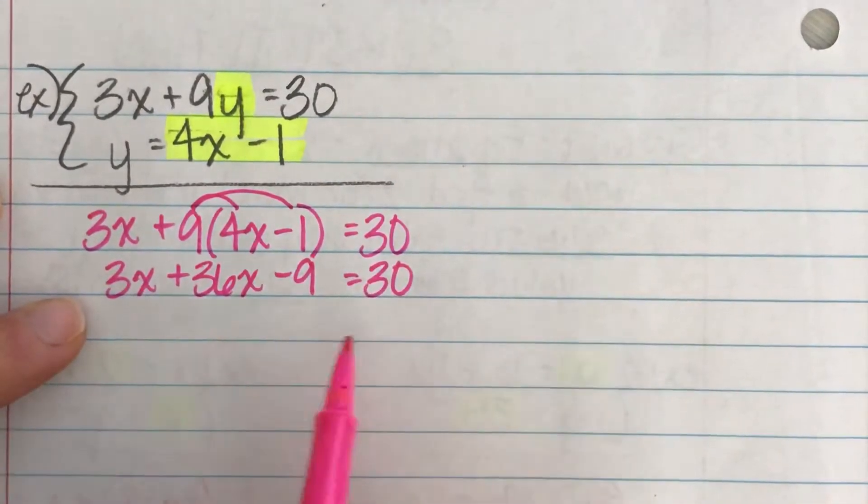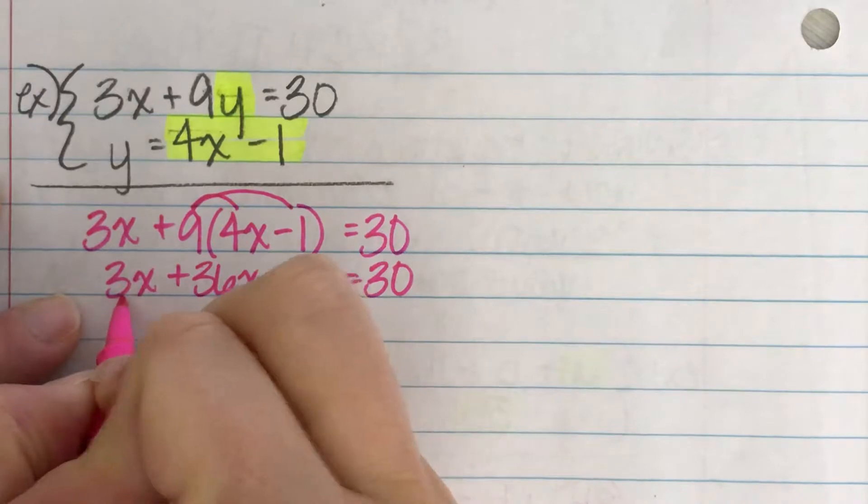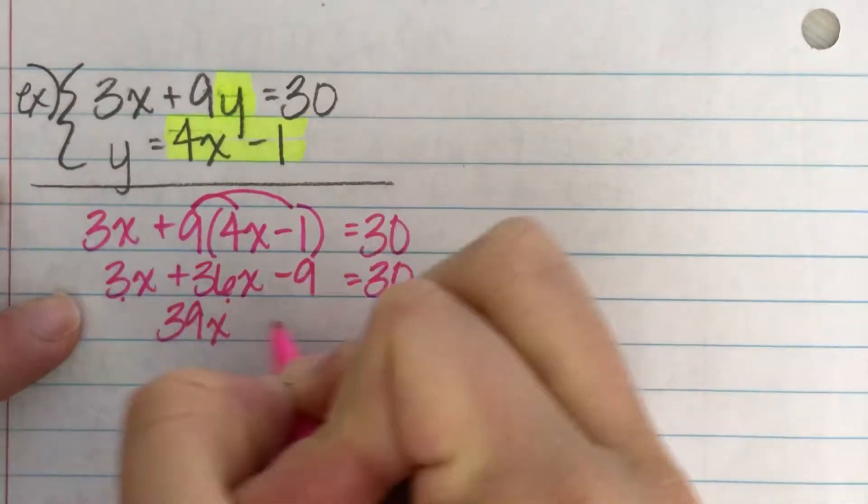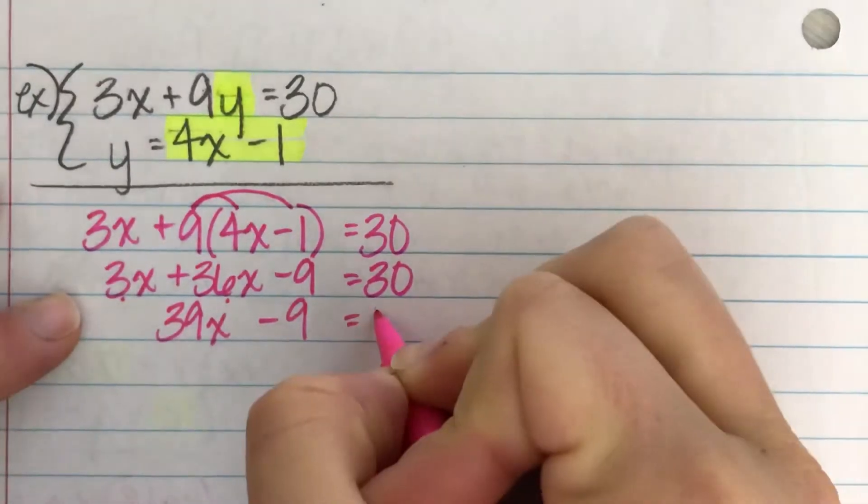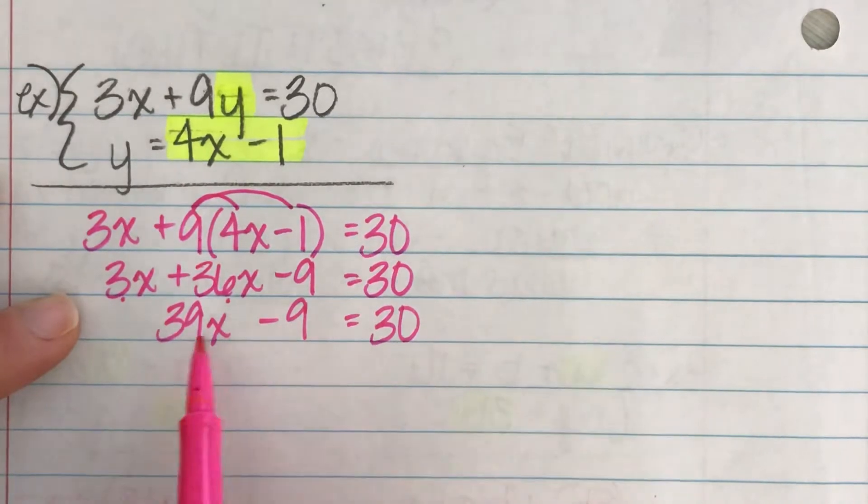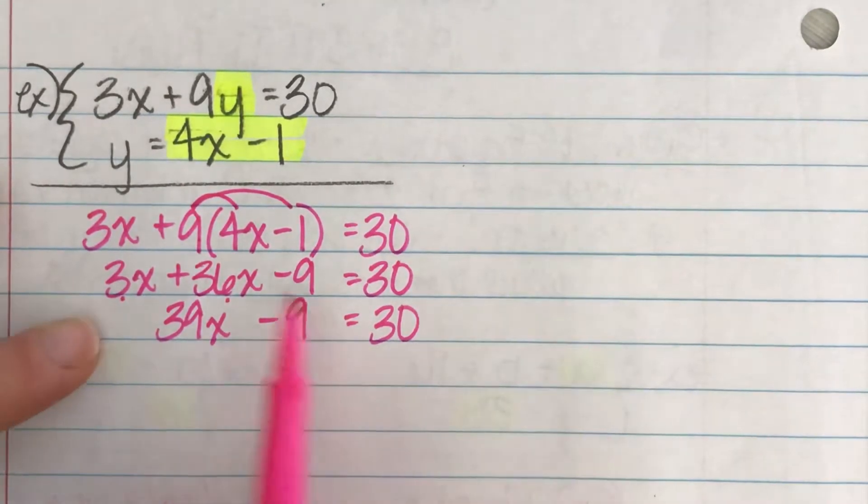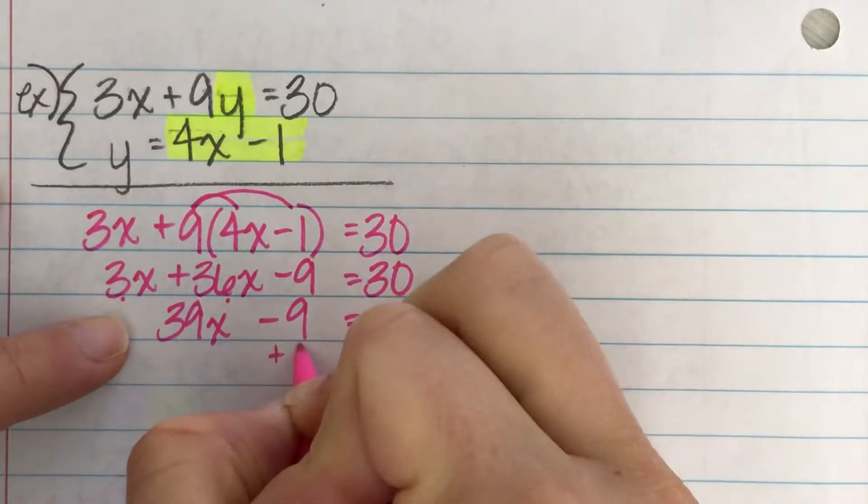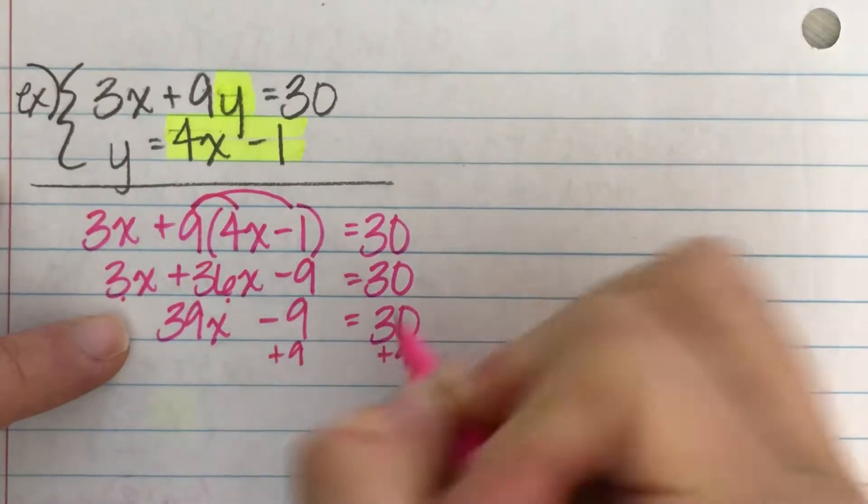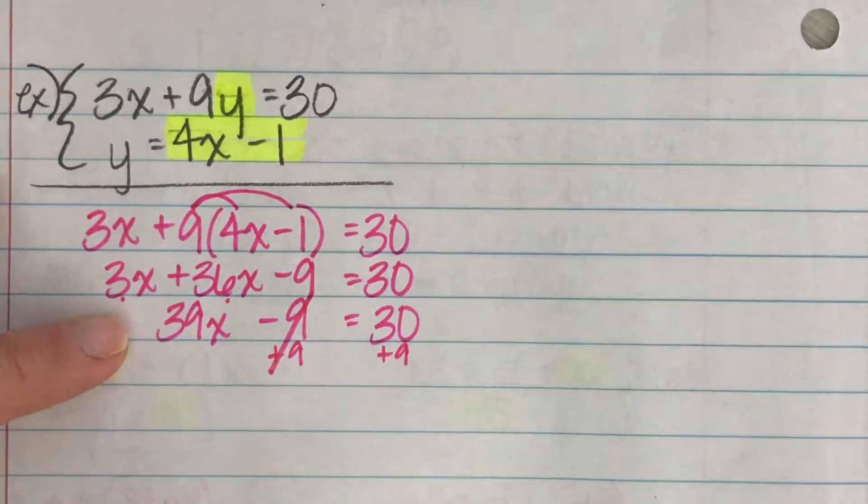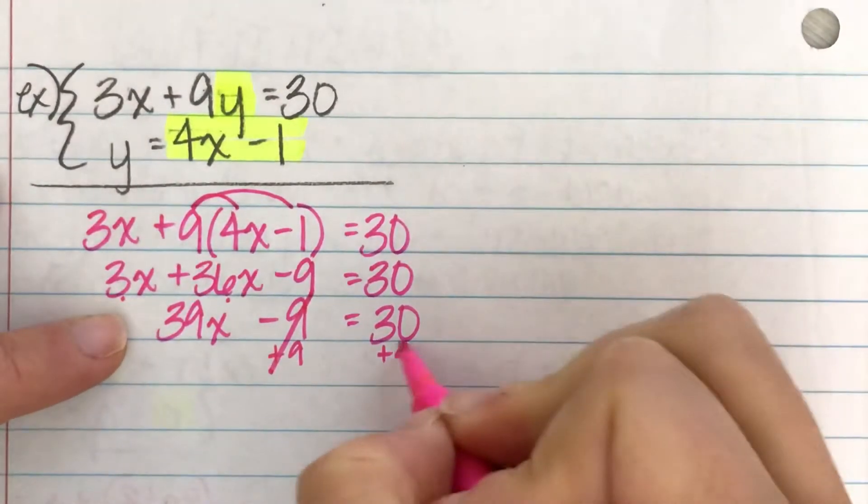So I'm going to get a 36x and then nine times negative one is negative nine. So 3x plus 36x. And then I'm just filling in the rest of it equals the 30. I'm dropping the 3x and the 30 down. Now if I'm thinking about cleaning this up, I can go ahead and combine 3x and 36x makes 39x minus nine equals 30.